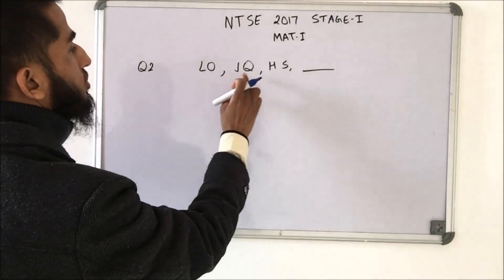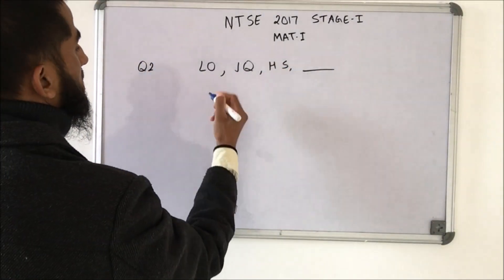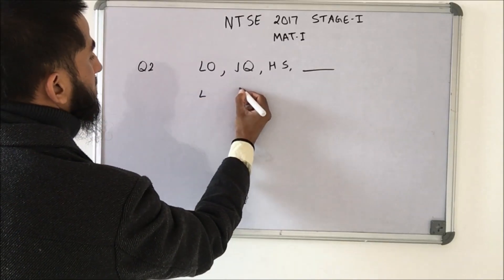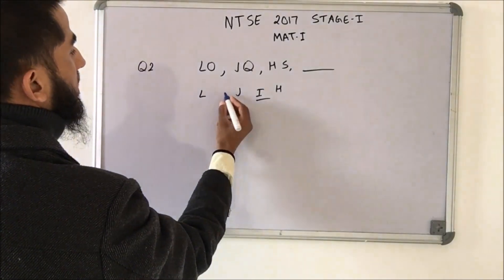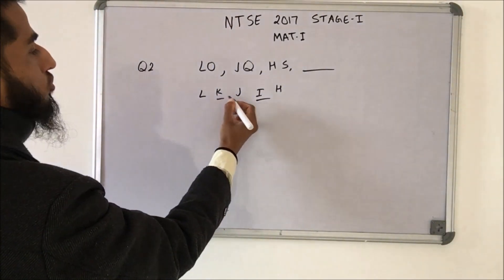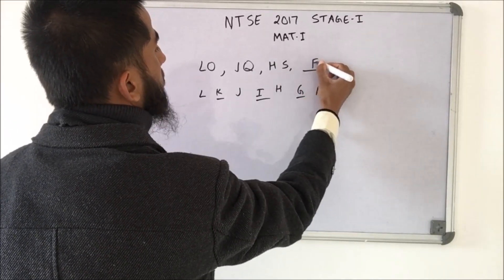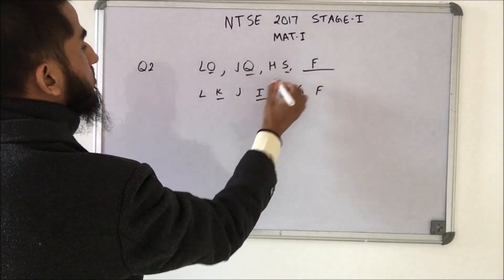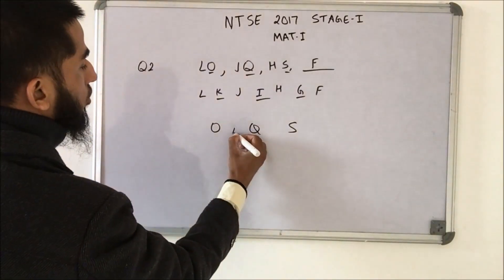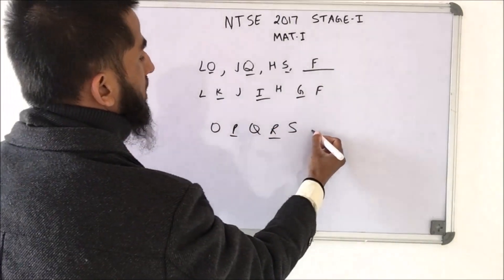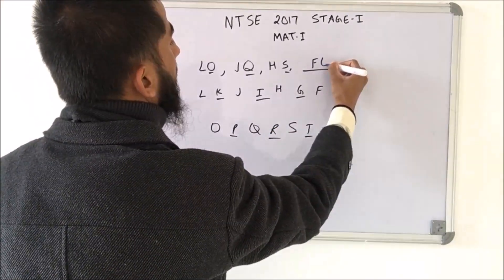We have a series here: LOJQ HSAB — we need to find out the last term. Looking at the first terms L, J and H: we have H, then I missing, J, K missing, L. So going back we will have F, with G missing. So the first term is F. Now the second terms: O, Q, S. The missing term pattern is O, PQ, RS, then T, then U. So the answer is FU.